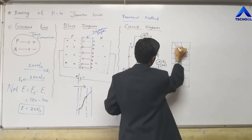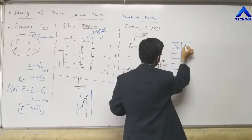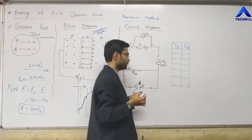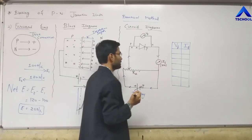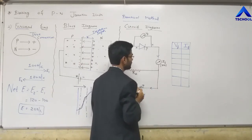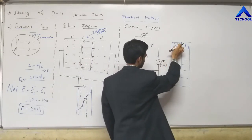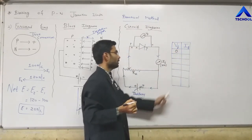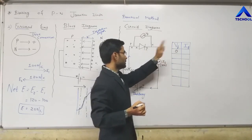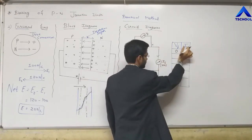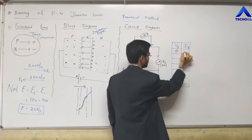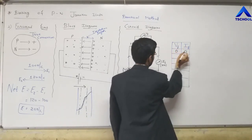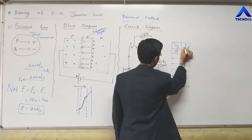In the practical experiment, we measure forward voltage VF and forward current IF. Initially, in the unbiased condition, voltage is 0 and current IF is obviously 0. The current is measured in milliamperes.